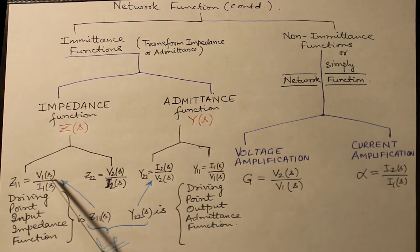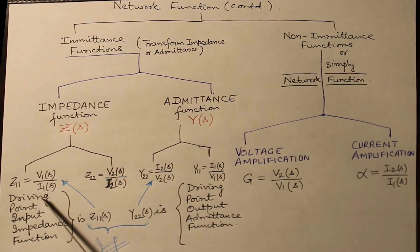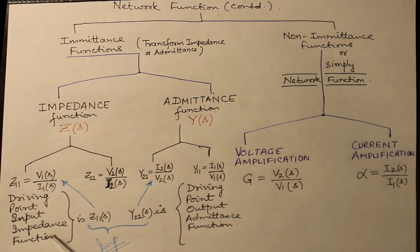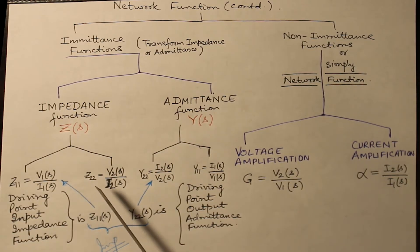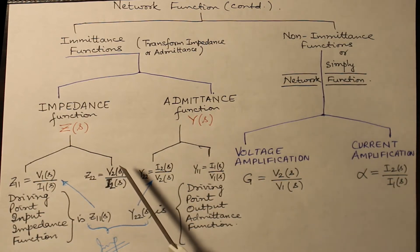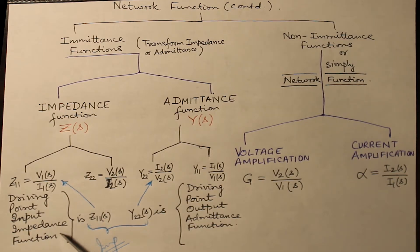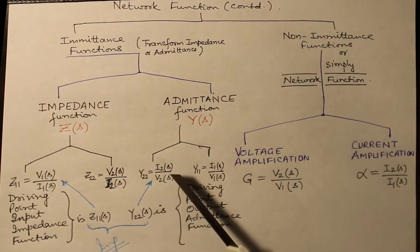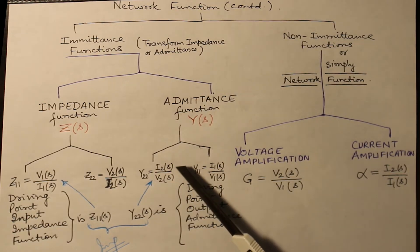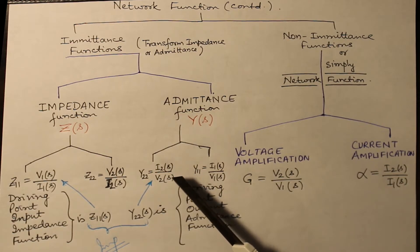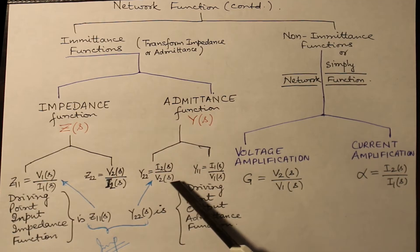Impedance function is basically the ratio of V1S by I1S, which is known as driving point input impedance function. From the input side, when you take the ratio of voltage to current, it gives you impedance as seen between the input terminals looking into the network after removing all other sources of excitation. Similarly, you have driving point output admittance function, which is I2S over V2S, the ratio of transform current to transform voltage looking from the output side.